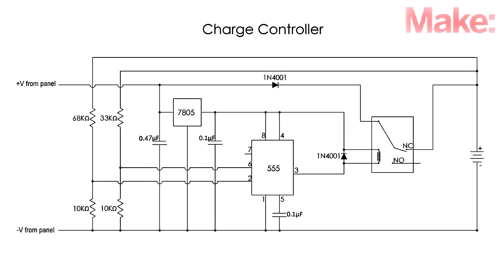When the battery reaches a certain voltage, the timer activates the relay and disconnects the battery from the panel to prevent overcharging. When the battery is removed or partially discharged, the system resets itself.